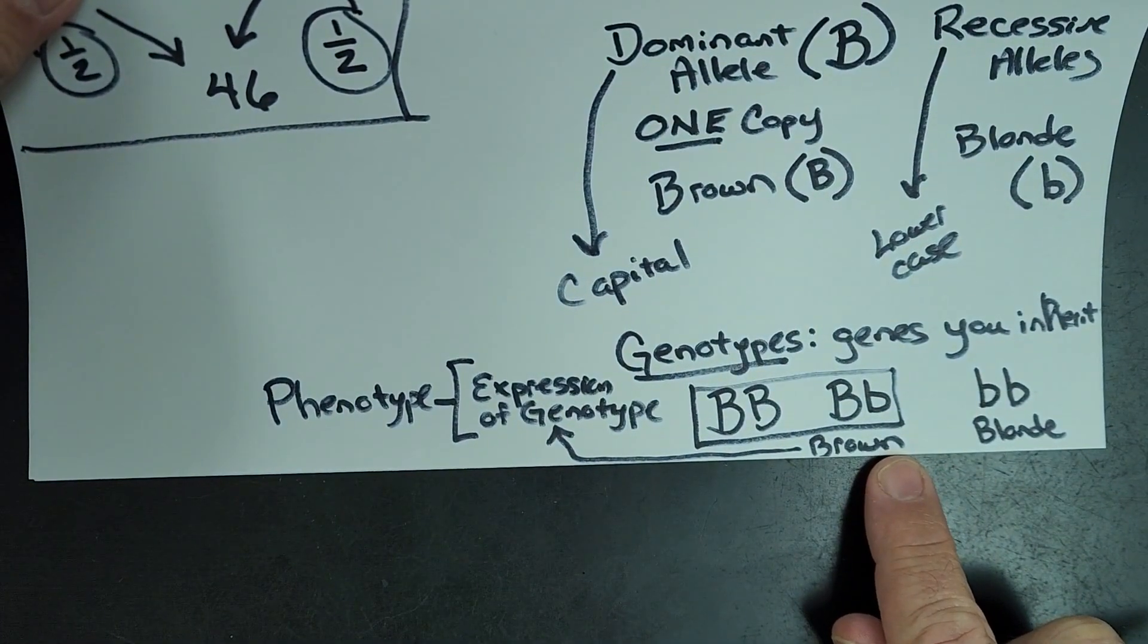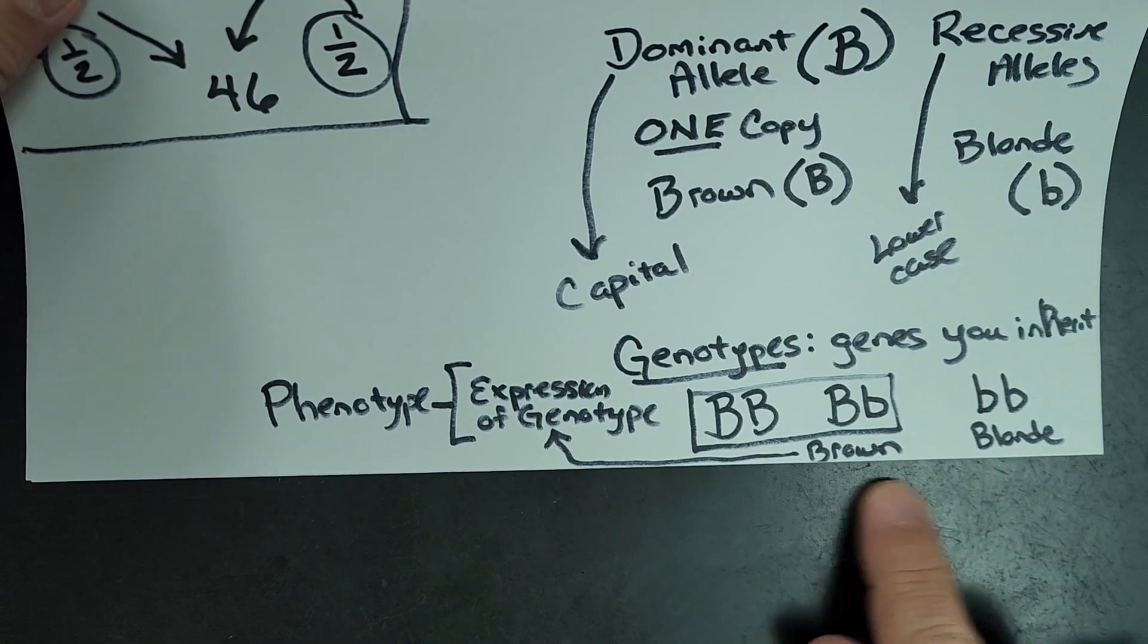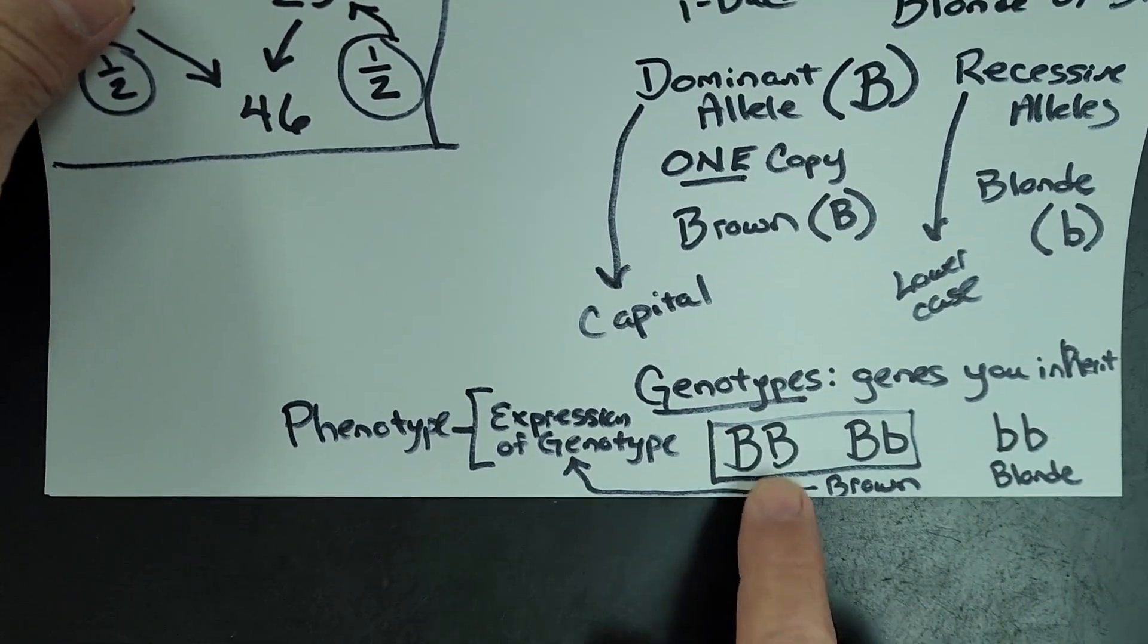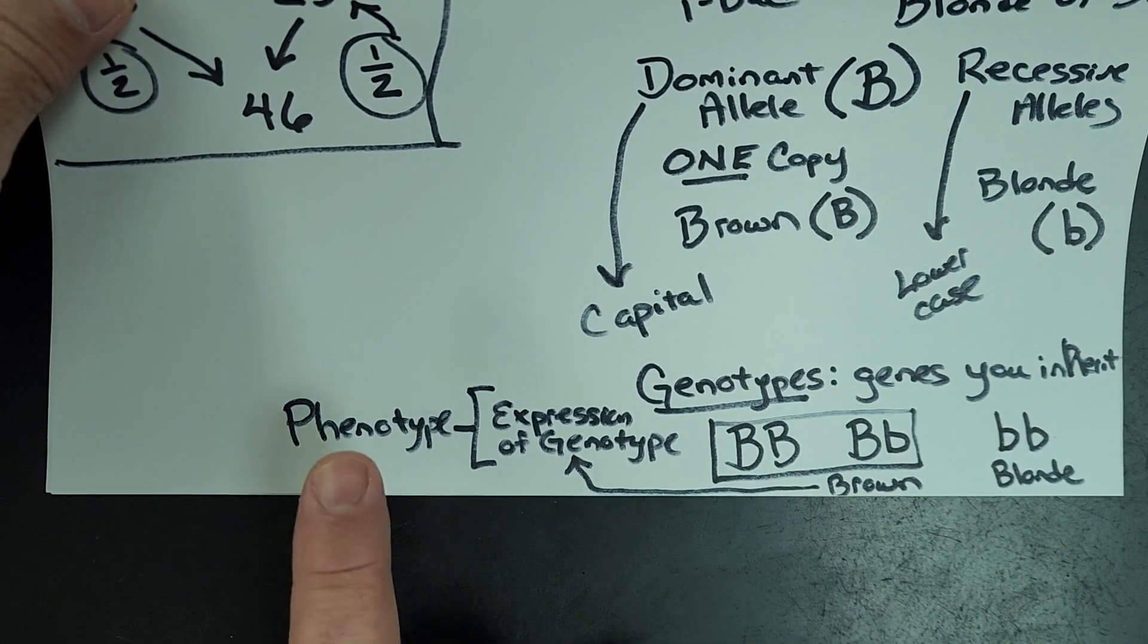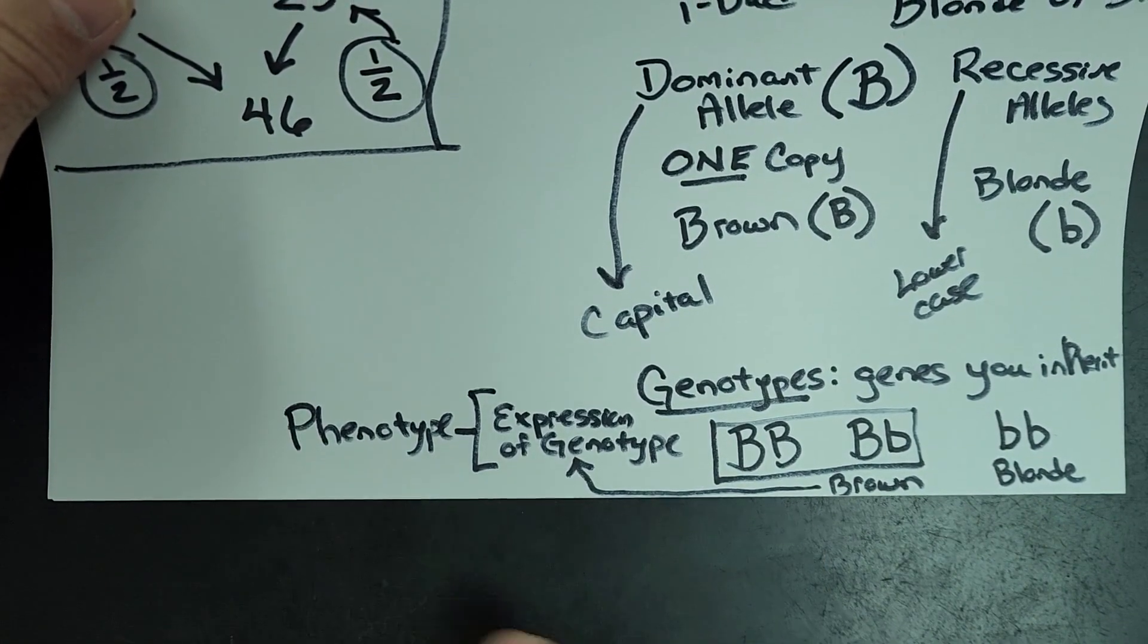So your phenotype is the color hair you have, or the color eyes you have, or the color skin you have. Your genotype are the genes that you have that are responsible for that hair color, eye color, skin color.